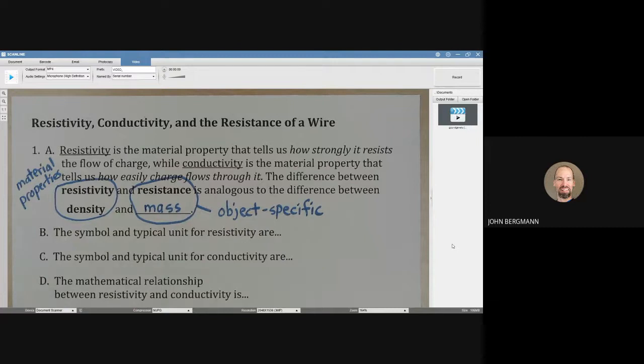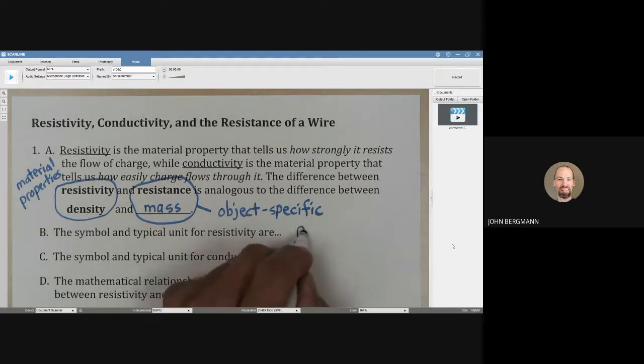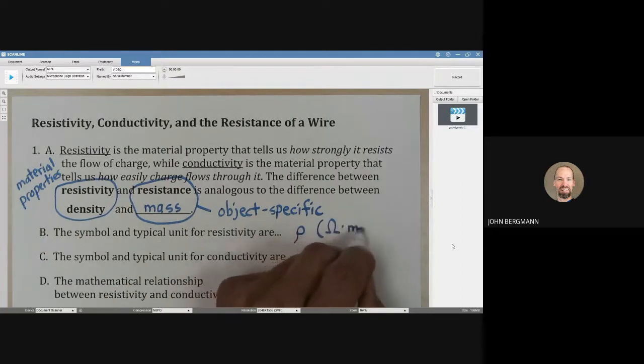The symbol and typical unit for resistivity are rho, and the unit that is commonly used is the ohmmeter.